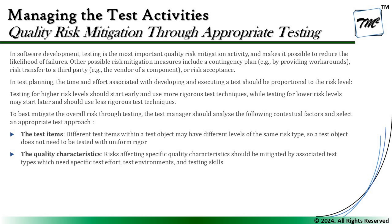To start, in software development, testing is the most important quality risk mitigation activity and makes it possible to reduce the likelihood of failures. Other possible risk mitigation measures include a contingency plan providing workarounds, risk transfer to a third party, or risk acceptance. In test planning, the time and effort associated with developing and executing tests should be proportional to the risk level. When we talk about risk-based testing, it is always important that the team conducts a proportionate amount of testing relative to the risk level.